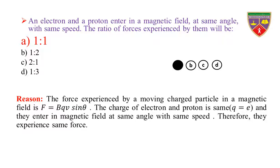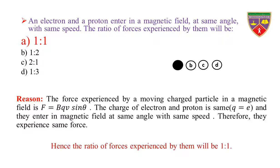Reason: The force experienced by a moving charged particle in a magnetic field is F = BQV sinθ. The charge of electron and proton is the same, Q = e. And they enter the magnetic field at the same angle with the same speed. Therefore, they experience the same force, because F does not depend upon the mass of the particle. Hence, the ratio of forces experienced by them will be 1 to 1.